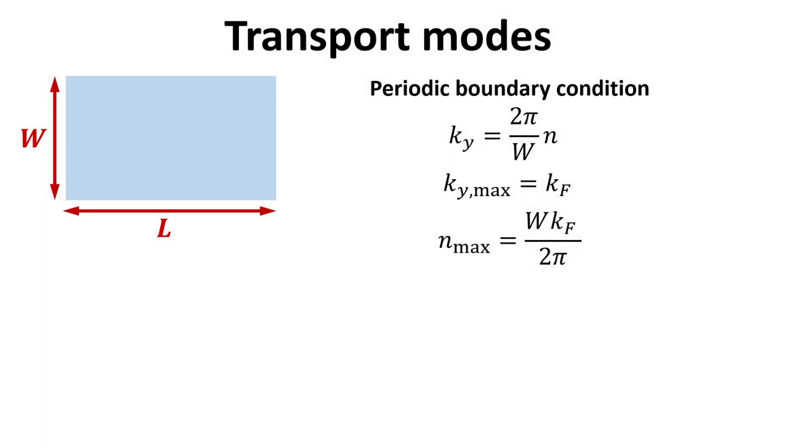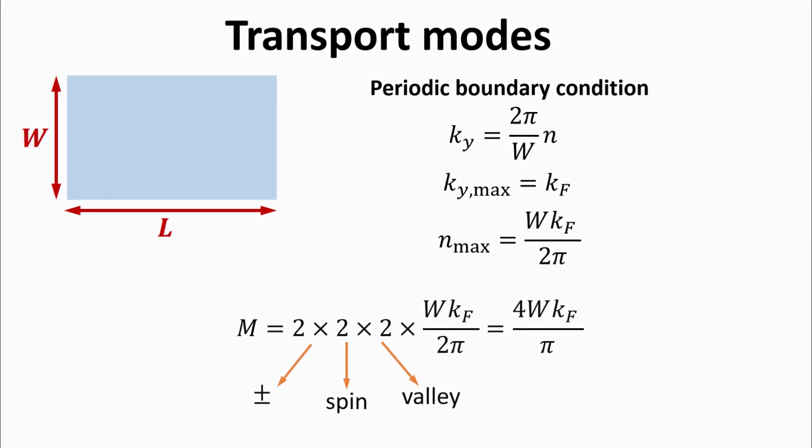Thus, the number of different transverse modes, n max, can be written as w times kf divided by 2 pi. The total number of transverse modes, or also known as transport modes m, would have to also account for the positive and negative wave vectors, the spin and valley degeneracies. Thus, we arrived at an expression for m.